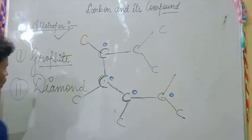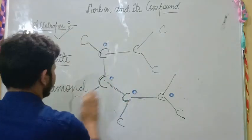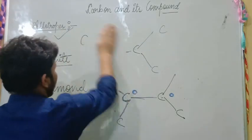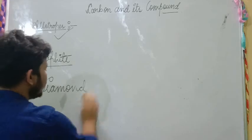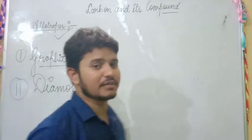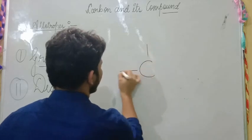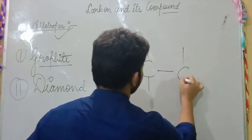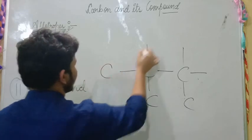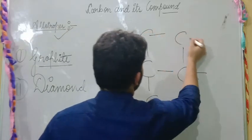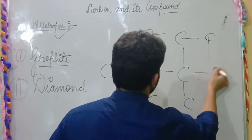The second allotrope is diamond. Diamond is the second allotrope of carbon. In diamond, each carbon atom is bonded by four other carbon atoms — its carbon atom is bonded by four other carbon atoms. This is the structure of diamond.